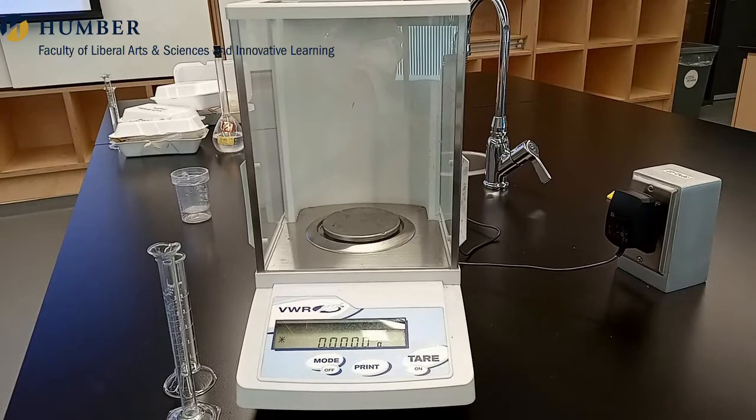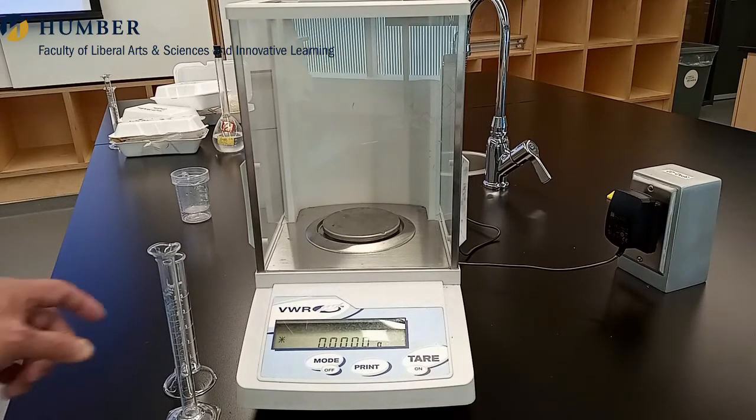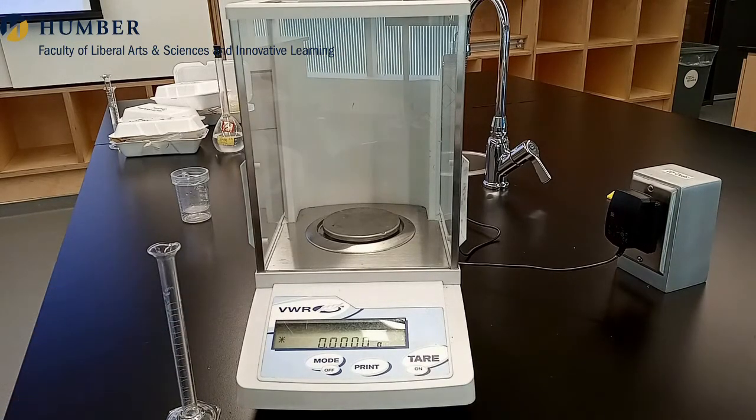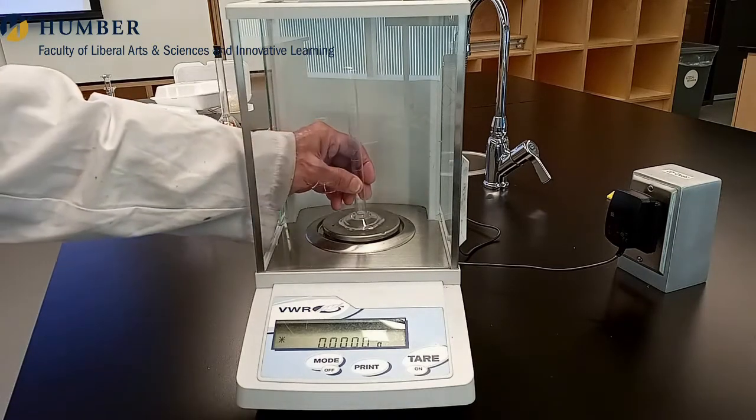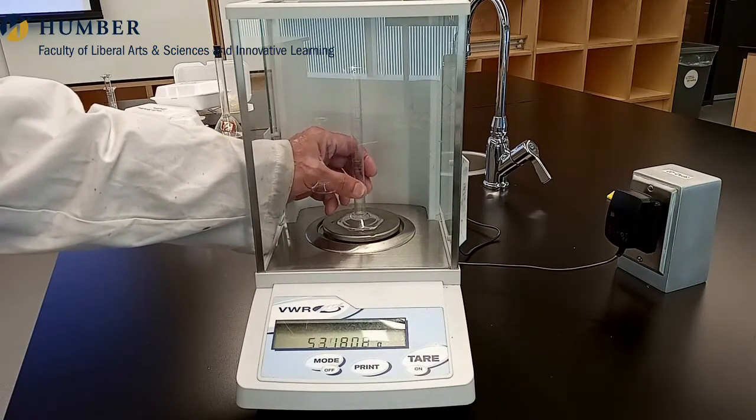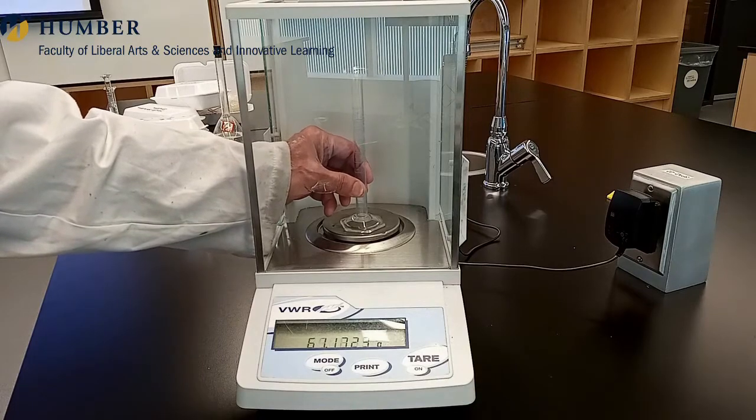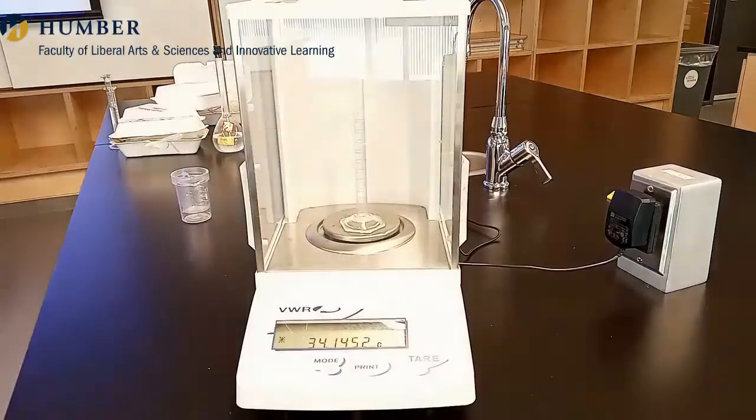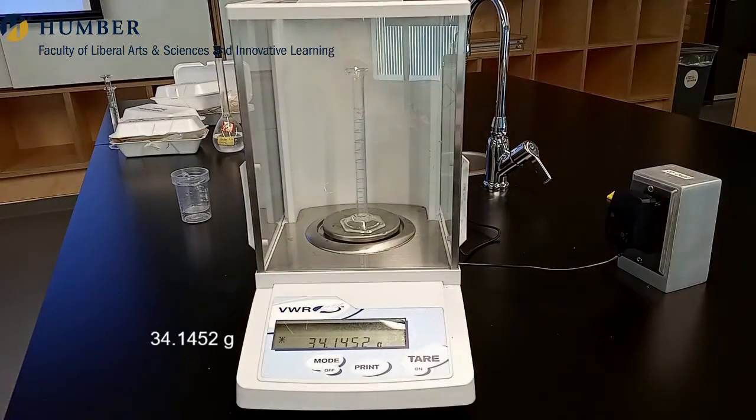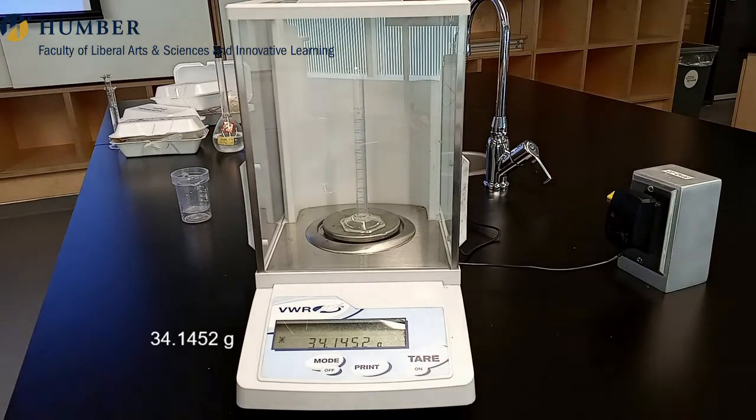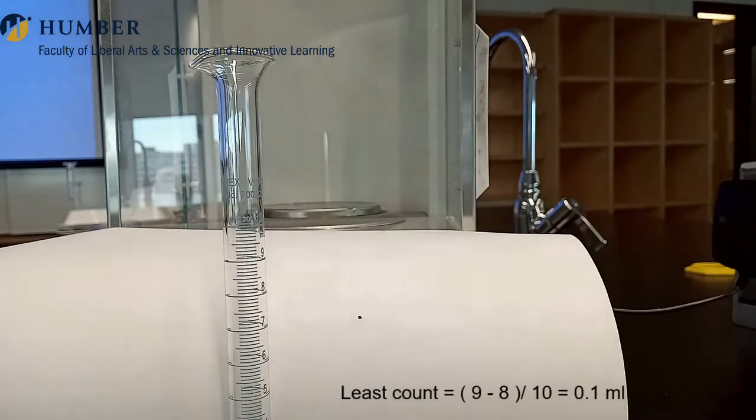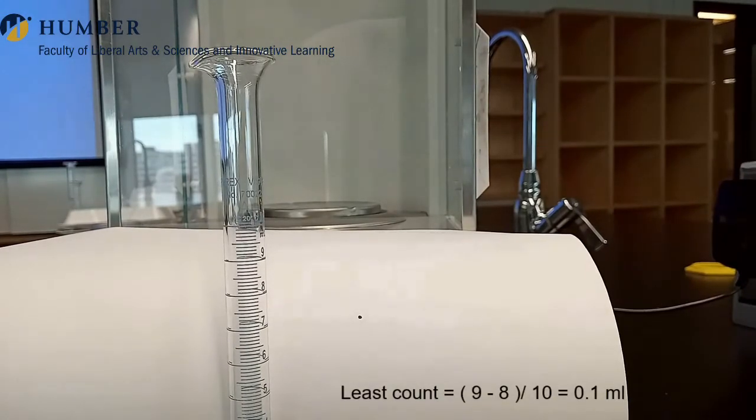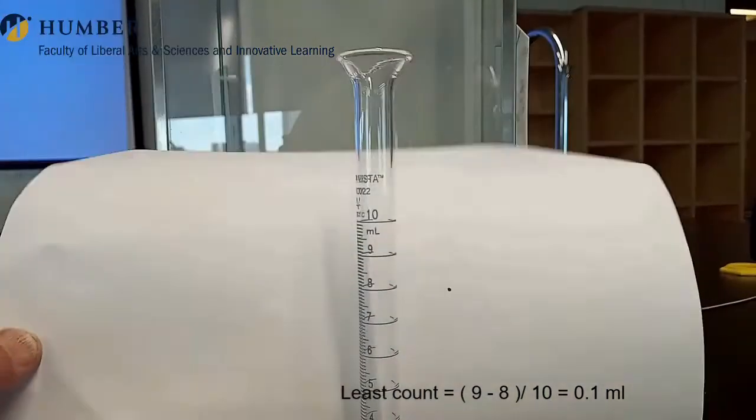Weigh an empty 10 ml measuring cylinder on the analytical balance. Record this mass of the empty cylinder as m1 for all samples. Determine the least count of the cylinder. If necessary, refer to my earlier video.